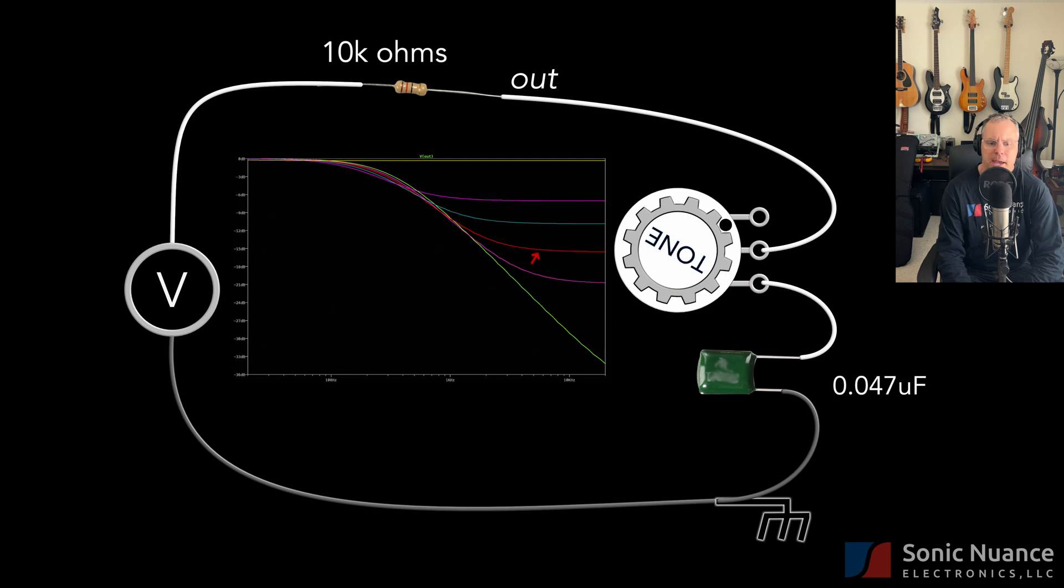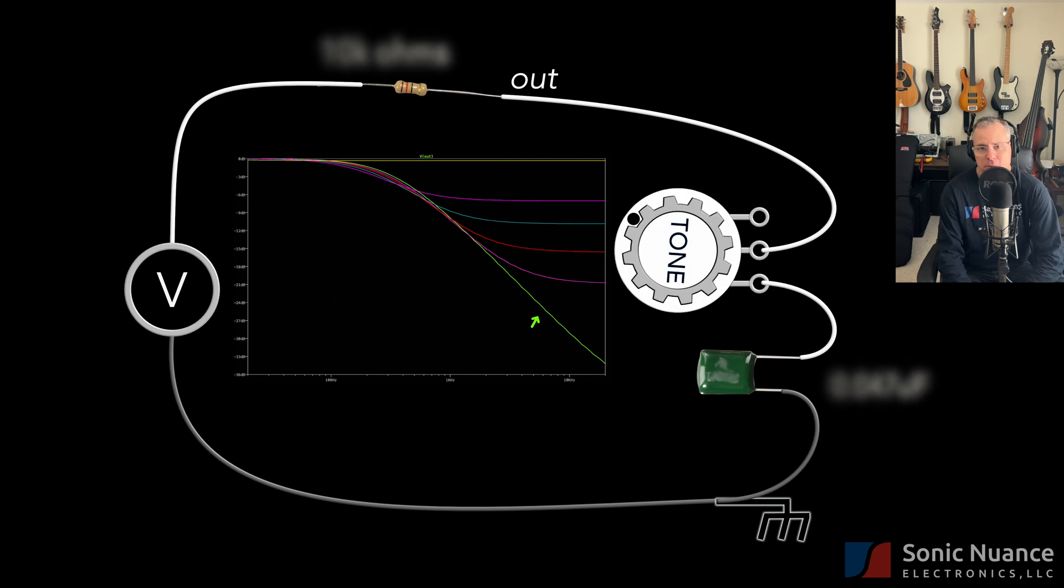In summary, the passive tone control circuit allows the musician to dial in how much of the pickup's high frequency output is attenuated. The circuit is highly dependent on the output resistance of the pickup, the value of the tone cap, and the setting of the tone pot. And that is how a tone circuit works on 90% of passive tone controls.